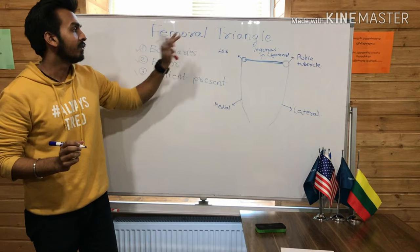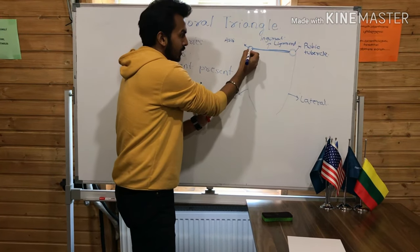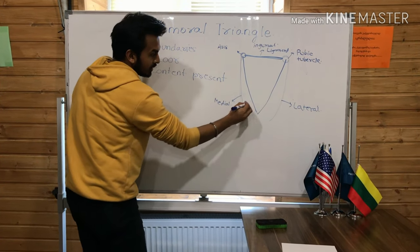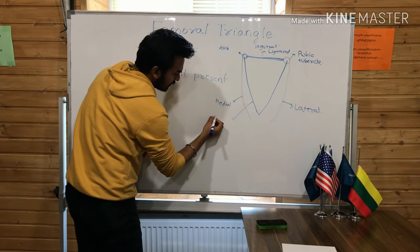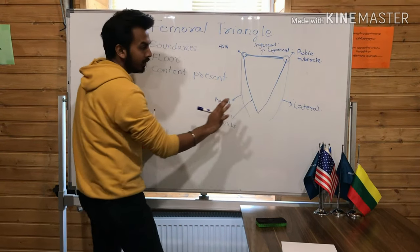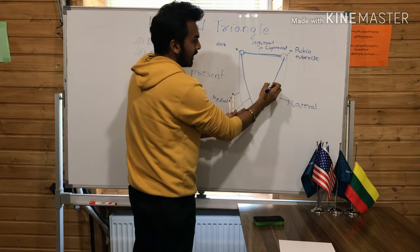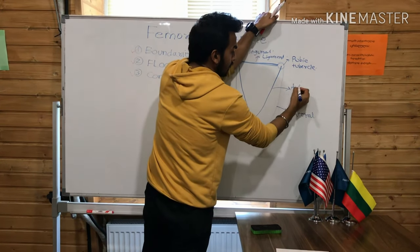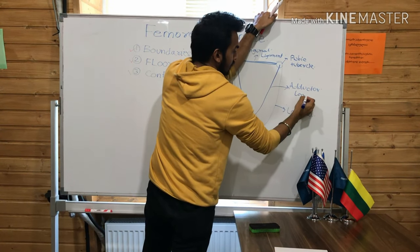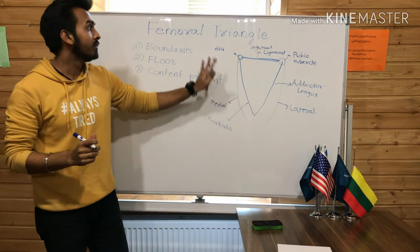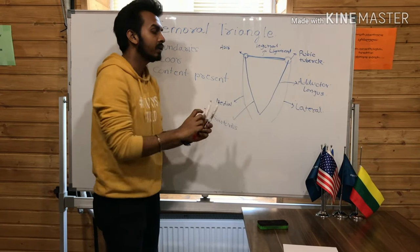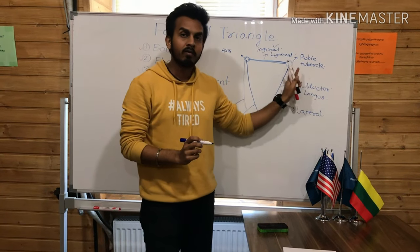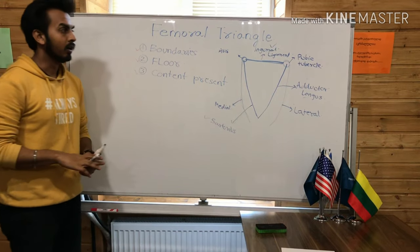The next two sides making the femoral triangle: on one side the sartorius muscle is present, and on the other side the adductor longus muscle is present. The sartorius muscle forms one border, and the adductor longus muscle makes the other border of the femoral triangle. So the superior border is the inguinal ligament, the medial border is the sartorius, and the lateral border is the adductor longus.